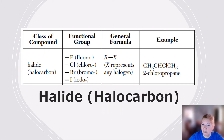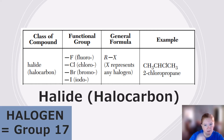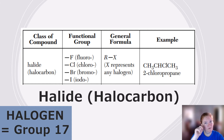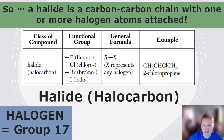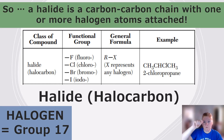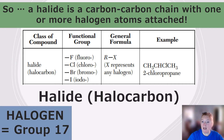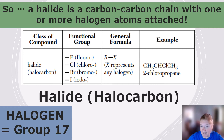First on the list is halide, or halocarbon — think halogens, Group 17. A halide is a carbon chain that has one or more halogen atoms attached to it: maybe one bromine, one iodine, or three chlorines. It just needs at least one halogen atom attached.